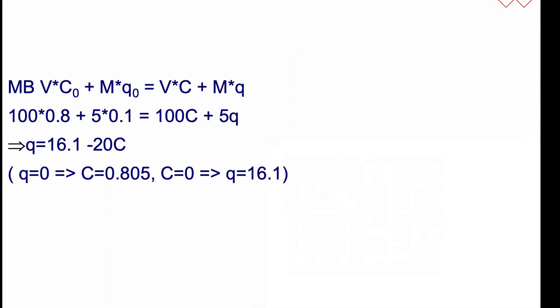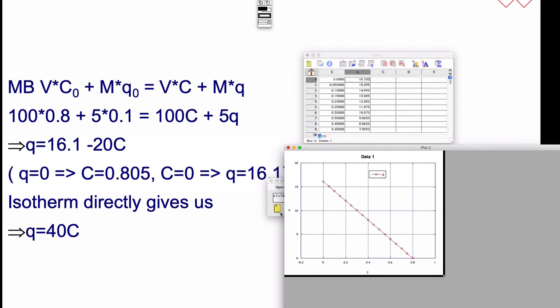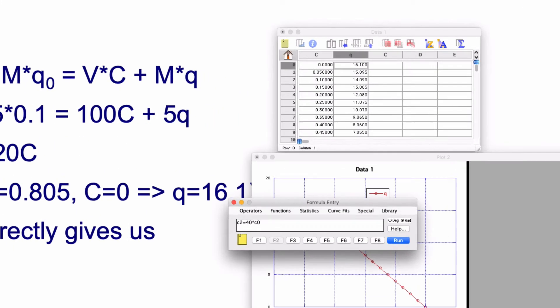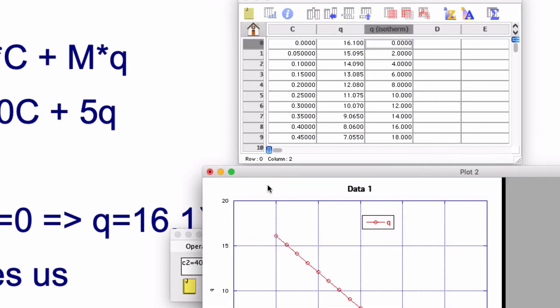We also need to have our isotherm, and that directly gives us q equals 40 times C. So we plot that as well. We can take column 2 equals 40 times the concentration, which in our case is column 0. We can call that q isotherm, and then we can change this plot here.